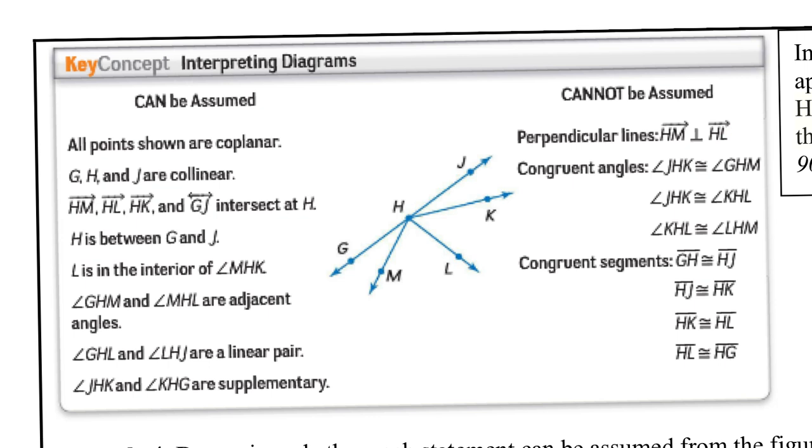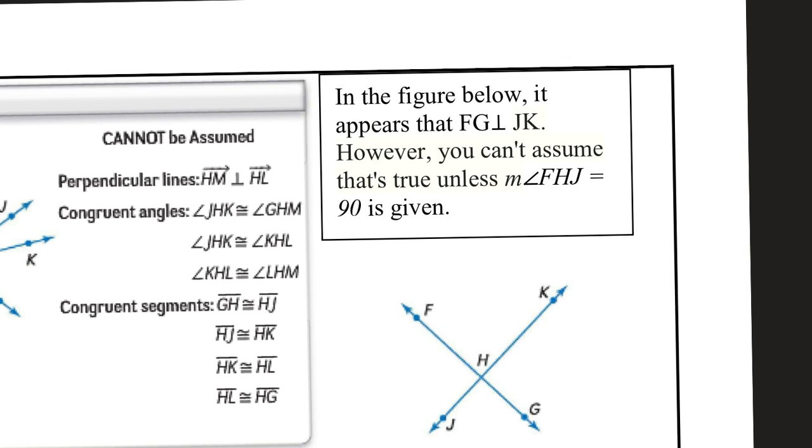Things that you cannot assume unless it's marked. You can't assume that any of these lines are perpendicular. Okay, AKA creating 90 degree angles. You cannot assume congruency. And you cannot assume that the segments are congruent. Even though it might look like these angles are congruent, or this line segment from H to J is going to be the same distance as from H to K. You can't assume that unless it's marked or given to you in some way or another.